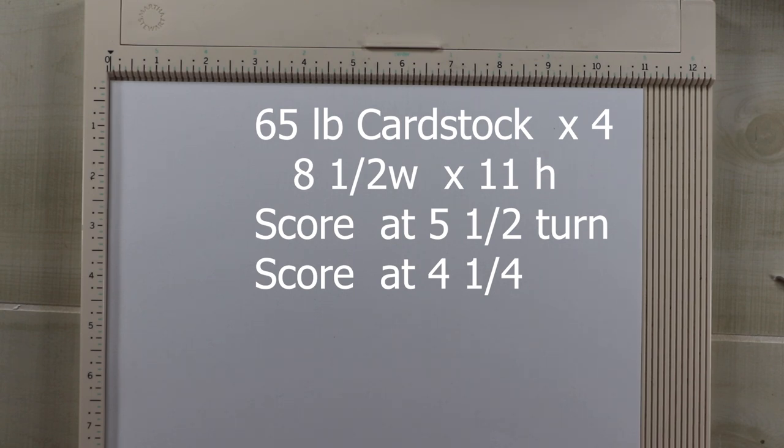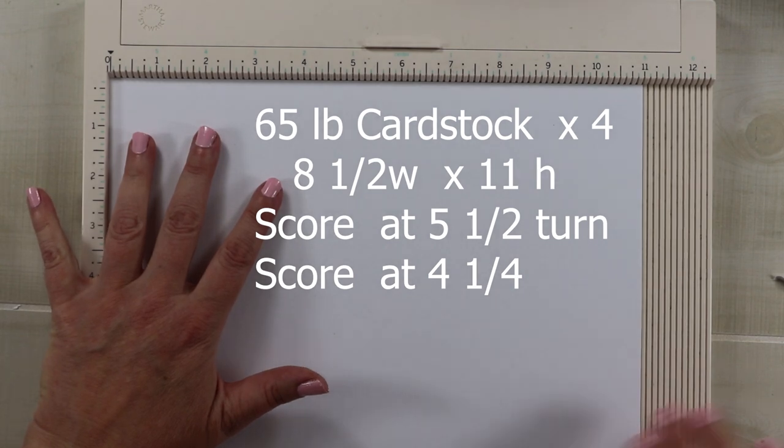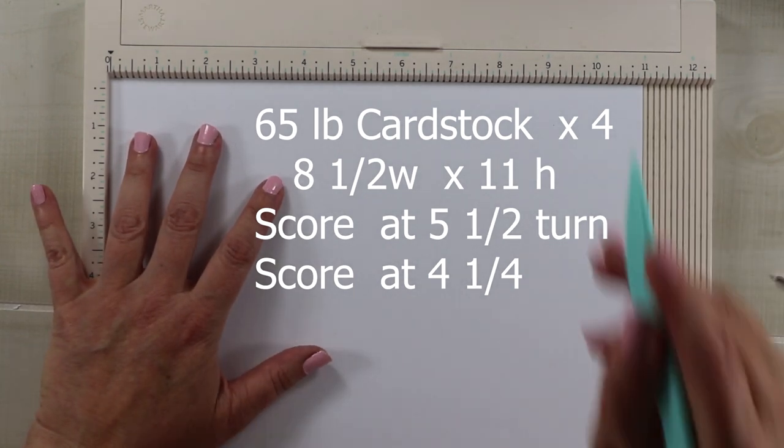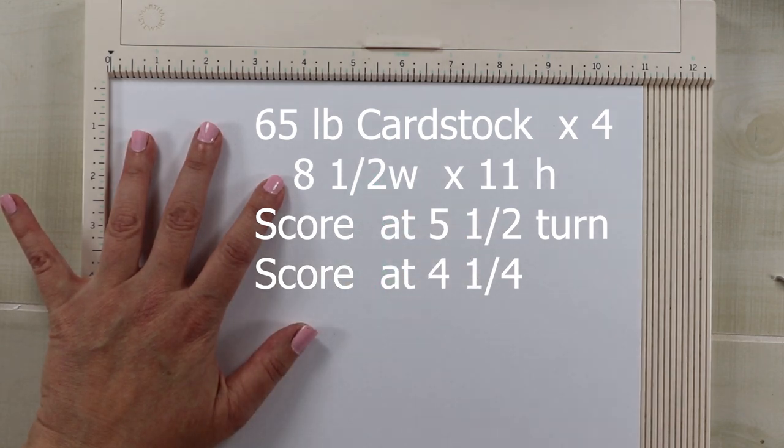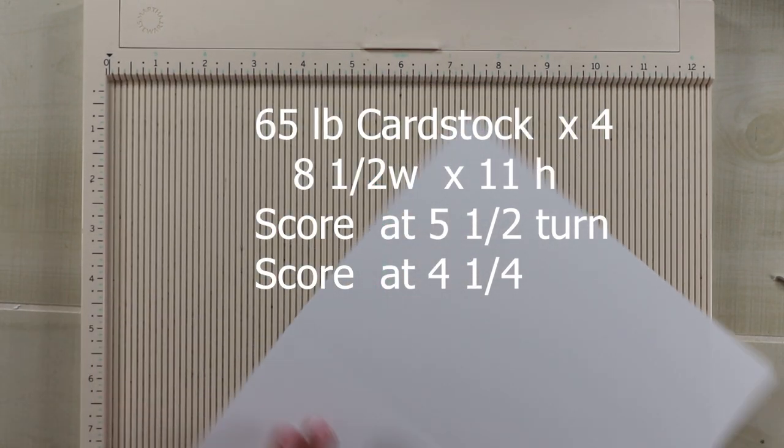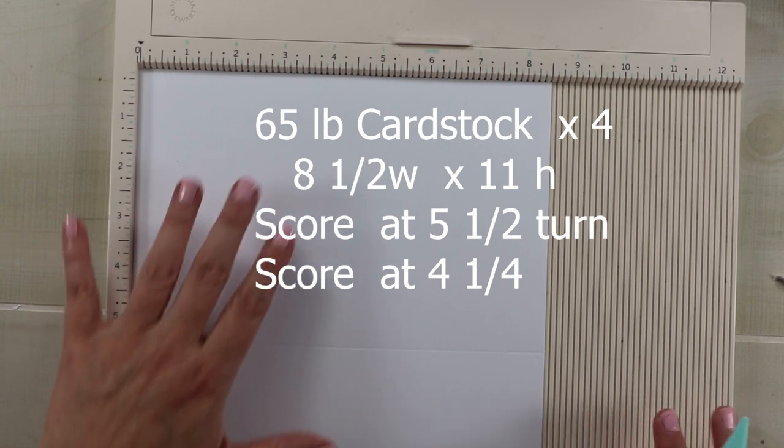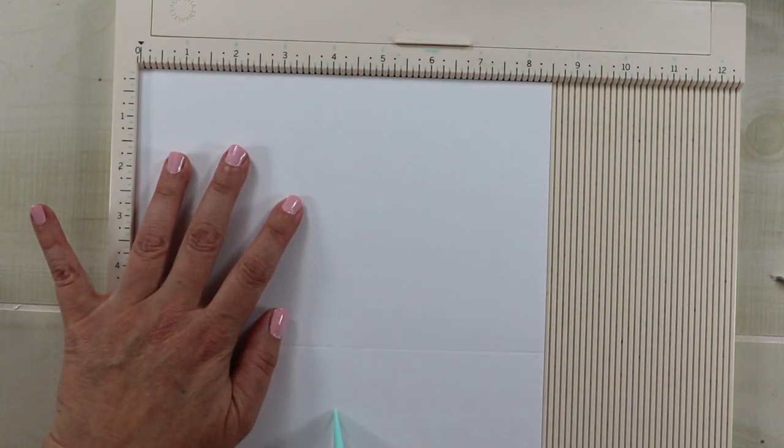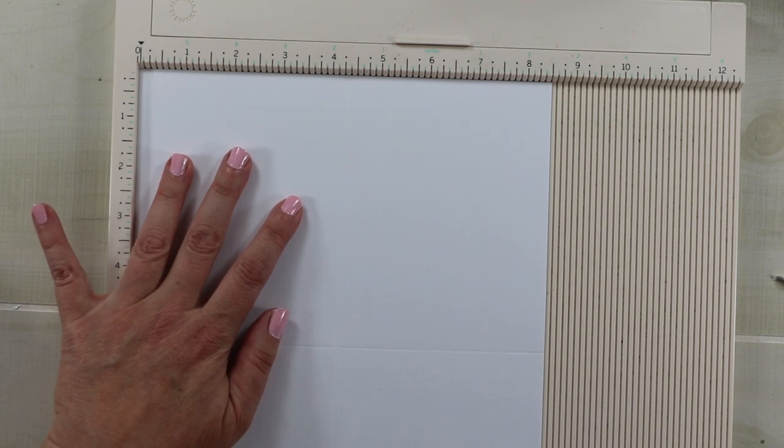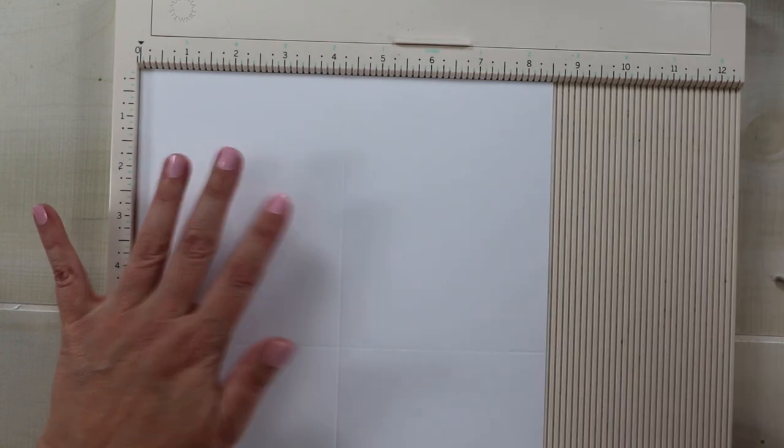This is 65 pound weight and so I am going to score this at five and a half on the long side and then I'm going to flip it and score it at four and a quarter. This is going to leave me with four quadrants that are just the same size as an A2 size card.